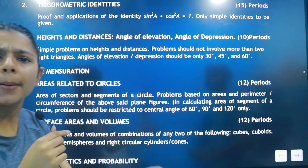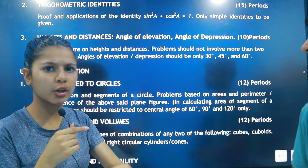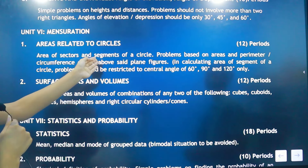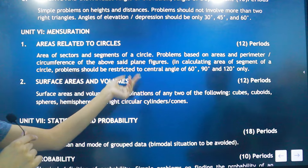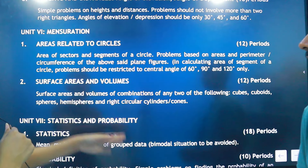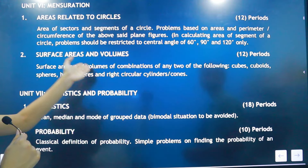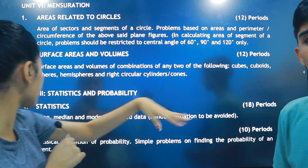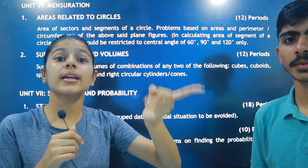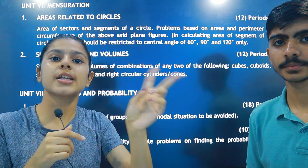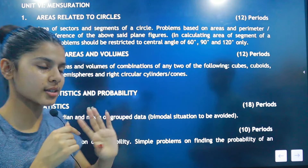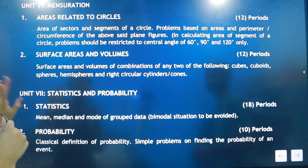In the Heights and Distances chapter, the two main topics are Angle of Elevation and Angle of Depression, related to word problems. For circles, you need the circumference area formula and the sector area formula — remember those formulas. In Surface Area and Volume, there are 6 figures: cube, cuboid, sphere, hemisphere, cylinder, and cone. You must remember the total surface area, lateral surface area, and volume formula for all three.